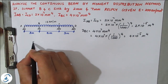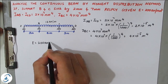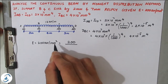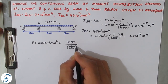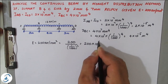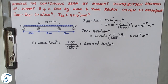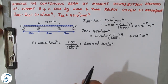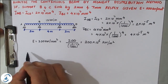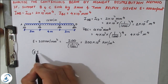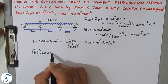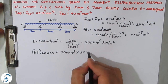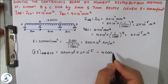E is given as 200 kN/mm². To convert to kN/m², we write 200 divided by (1/1000)², which gives 200×10⁶ kN/m². Now we can multiply E and I. EI for AB and CD equals 200×10⁶ × 2×10⁻⁵ = 4000 kN·m².